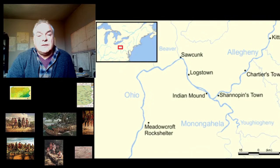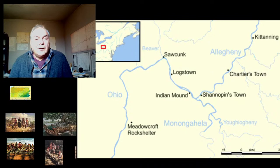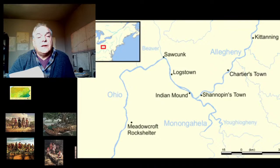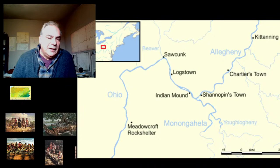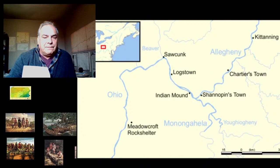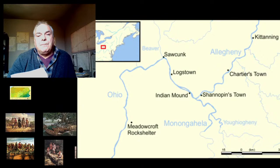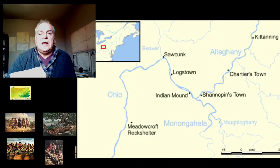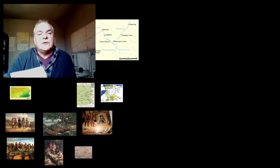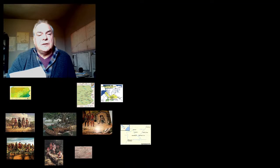Here's a map of the area we eventually moved to as well — the Ohio and Allegheny River system. On the left is the Ohio River, and right down at the left it says the Meadowcroft Rock Shelter — an archaeological site where it's been determined people have lived up to 16,000 years ago. Going up to the top you see Saukhunk, a town called Logstown, Indian Mound, Shannopins Town, Chartiers Town, and then Kittanning — and we eventually had no choice but to move to these areas after the Susquehanna lands were sold.